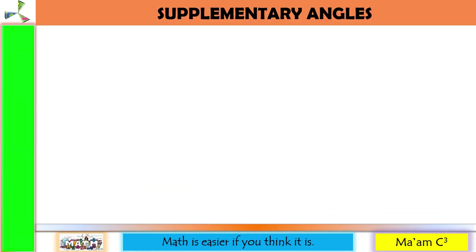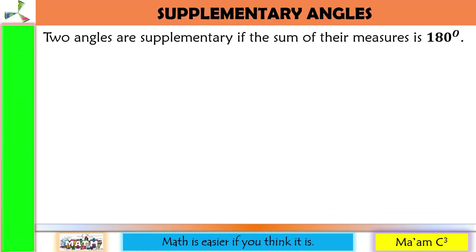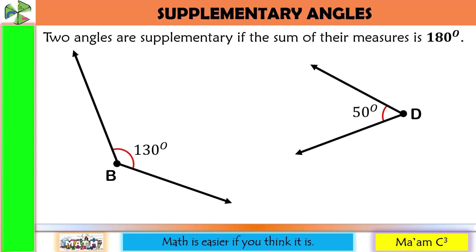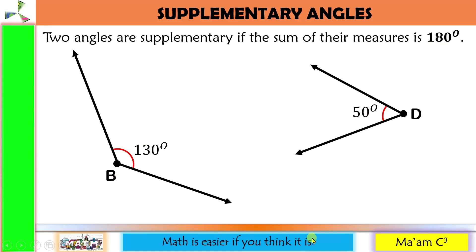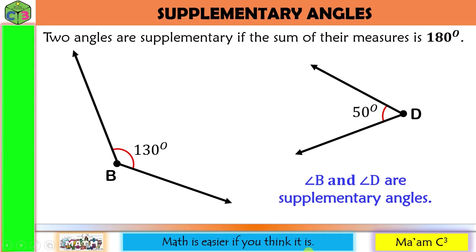The next pair is supplementary angles. Two angles are supplementary if the sum of their measures is 180 degrees. Here is an example: 130 plus 50 is equal to 180. Angle B and angle D are supplementary angles.